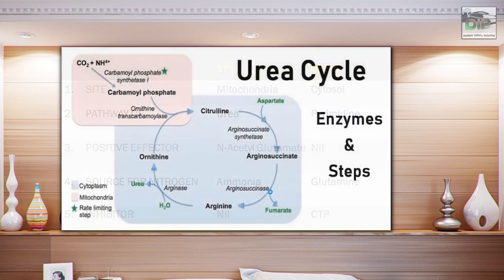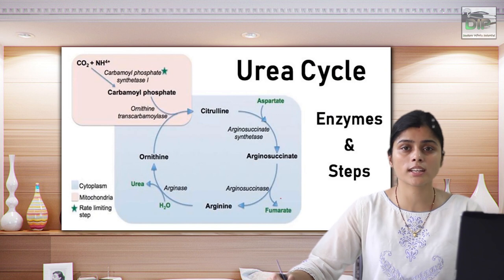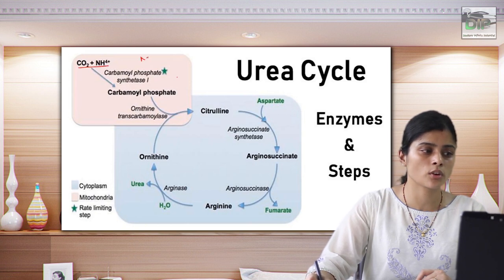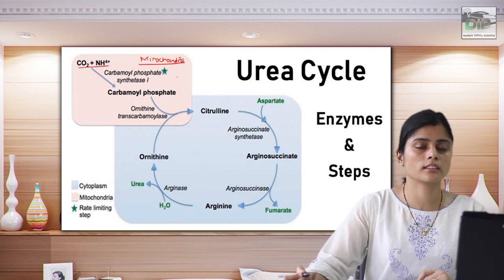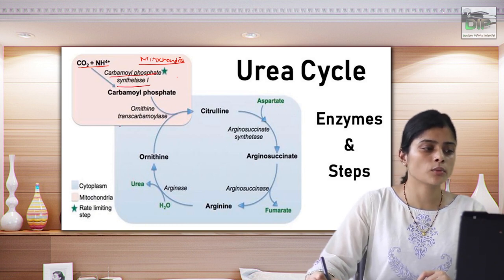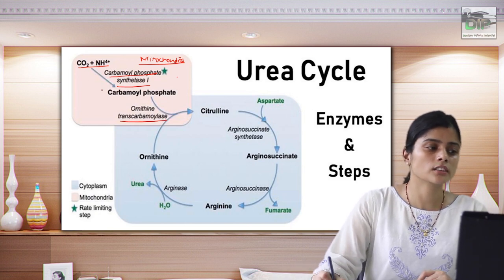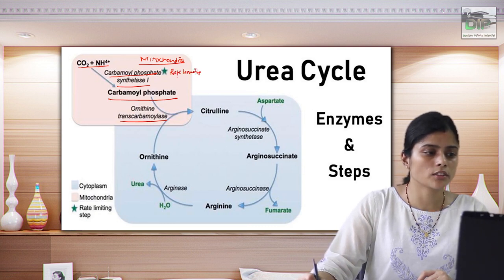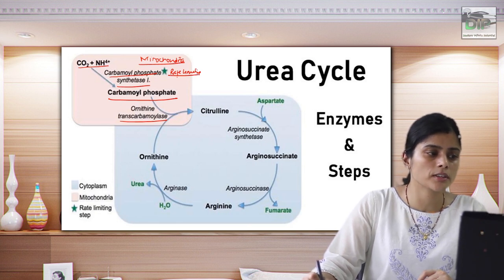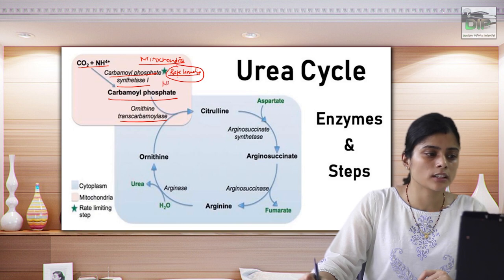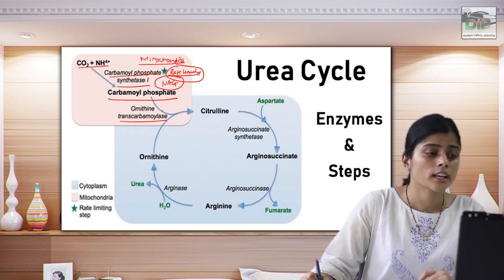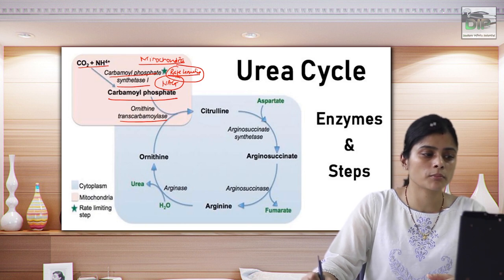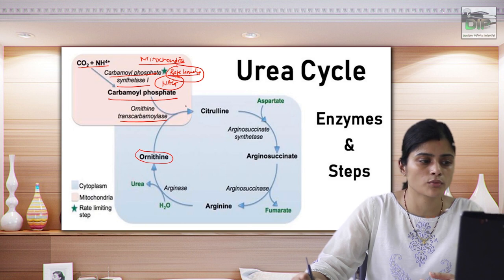This is the whole urea cycle and its steps. The reactions in the lighter pink region occur in the mitochondria, where two enzymes — CPS1 and ornithine transcarbamylase — are present. The first step forms carbamyl phosphate, the rate-limiting step, and CPS1 is allosterically regulated by N-acetylglutamate. After forming carbamyl phosphate in the mitochondria, it combines with ornithine via ornithine transcarbamylase to form citrulline.